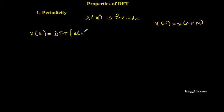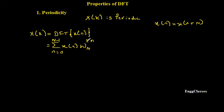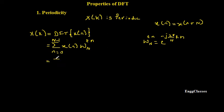X of K is equal to DFT of X of N, which is equal to summation N equal to 0 to N minus 1, X of N, W_N to the power K into N. W_N is the twiddle factor, where W_N is equal to e to the power minus J 2 pi divided by capital N. So W_N to the power K into N — multiply the exponent by K into N to get the full twiddle factor.